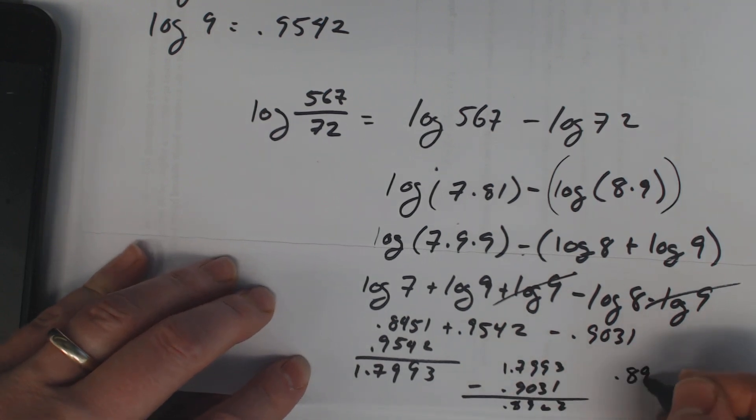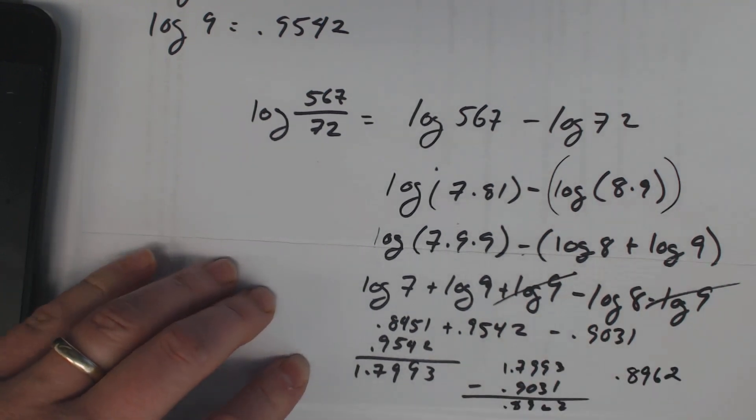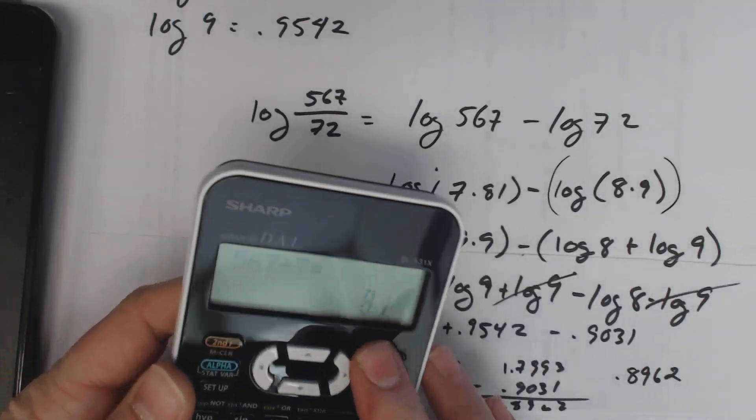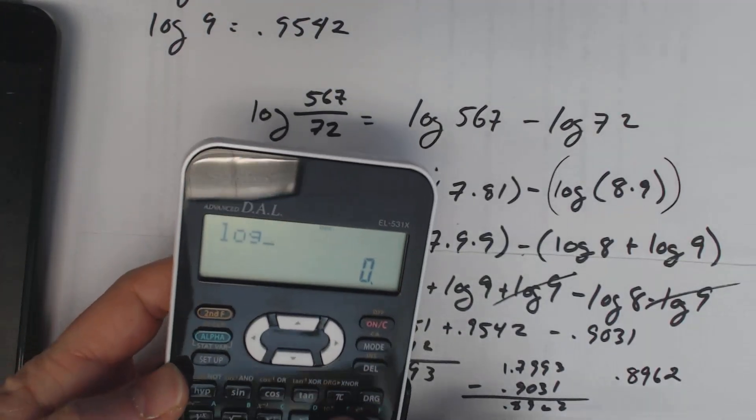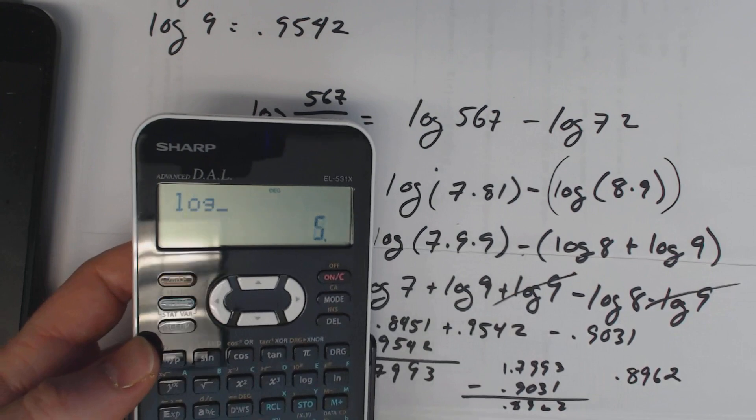And let's just see how close we are there, log of 567/72. So there we go, estimating logarithms.